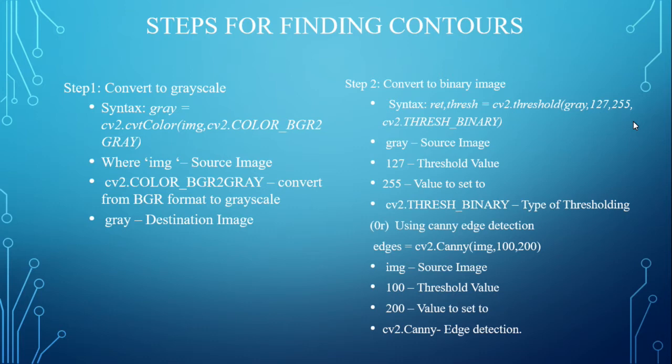Alternatively, instead of the above threshold steps, we can use Canny edge detection, which gives us the sharp edges of the image. The syntax is: edges = cv2.Canny(img, 100, 200), where img is the source image, 100 is the lower threshold value, 200 is the upper threshold value, and cv2.Canny is the function for Canny edge detection.